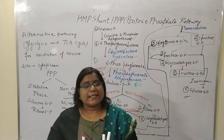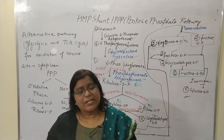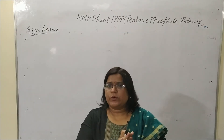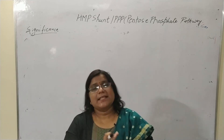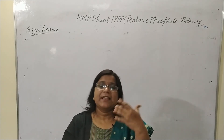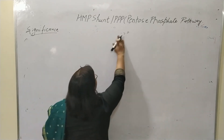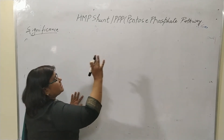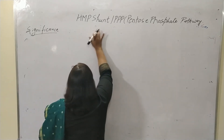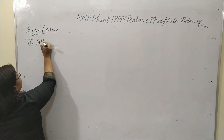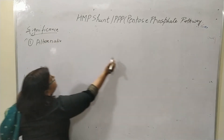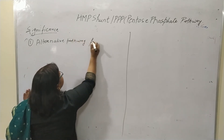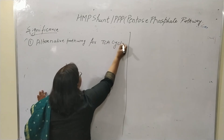Now we will discuss the significance of the HMP shunt or Pentose Phosphate Pathway. As already mentioned, it is an alternative pathway for glycolysis and the TCA cycle — that is its primary significance. In case the cell is unable to perform glycolysis and the TCA cycle, the cell is still able to generate energy with the help of the HMP shunt.